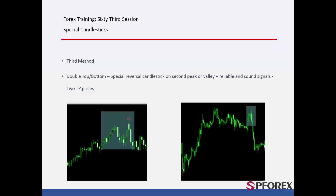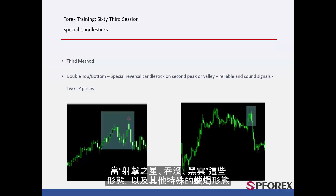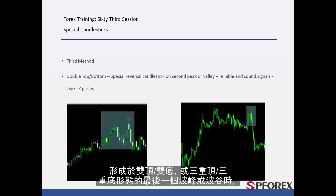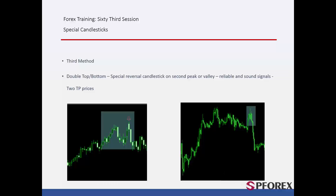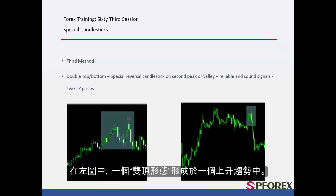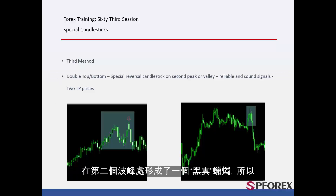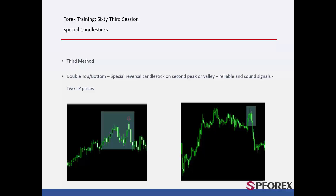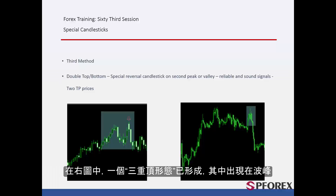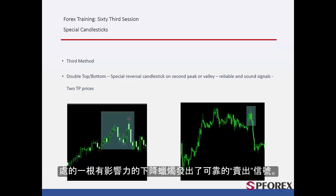Third method: When a shooting star, engulfing, dark cloud and other special candles form on the last peak or valley of a double or triple bottom pattern, then a trader can place an order based on more reliable signals. On the left graph, a double top has formed on an uptrend. A dark cloud has formed on the second peak, so a trader could place a sell order lower than the given candle. On the right graph, a triple top has formed in which a powerful bearish candle on its peak generated a reliable sell signal.